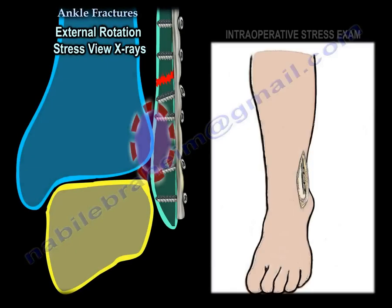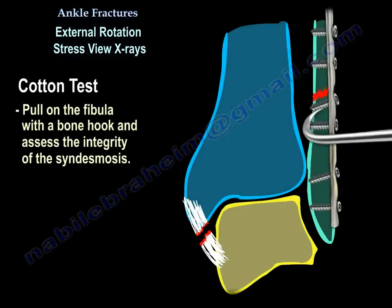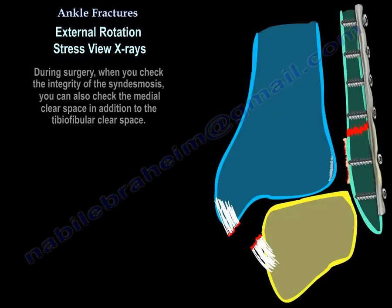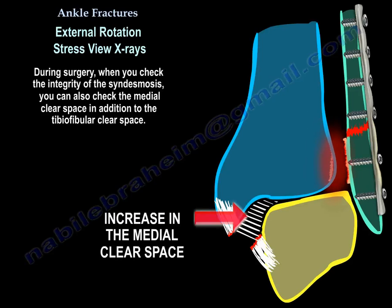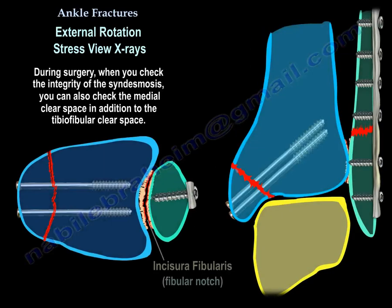In surgery, the external rotation stress view x-rays or the cotton test will check on the integrity of the syndesmosis. During surgery, when you check the integrity of the syndesmosis, you can also check the medial clear space in addition to the tibiofibular clear space.